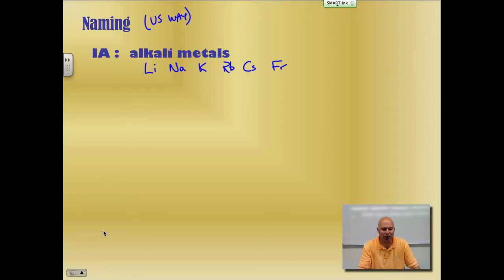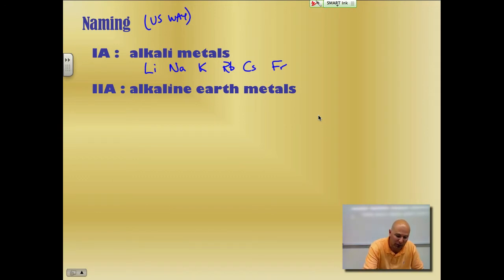The next, the alkaline earth metals. The alkaline earth metals, group 2A, starting with beryllium, magnesium, calcium, strontium, barium, and radium.